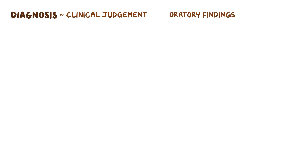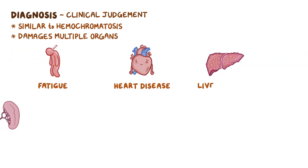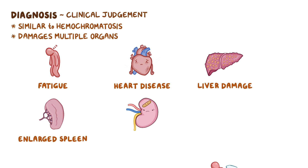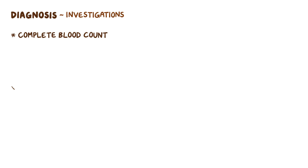A diagnosis of sideroblastic anemia can be reached with a combination of both clinical judgment and laboratory findings. Clinically, patients with sideroblastic anemia present very similarly to patients with hemochromatosis, as both diseases involve a buildup of excess iron within the body. The excess iron damages multiple organs, which can cause fatigue, heart disease, liver damage, enlarged spleen, kidney failure, and diarrhea. Investigations should include a complete blood count, peripheral blood smear, and iron studies.